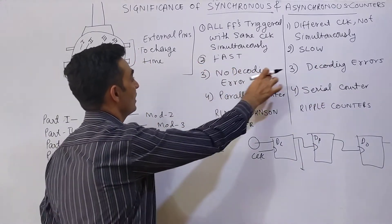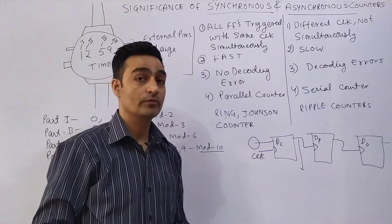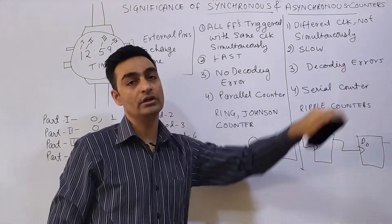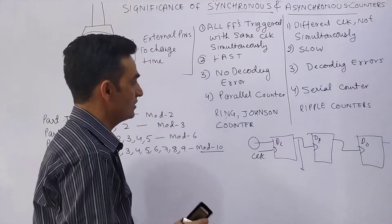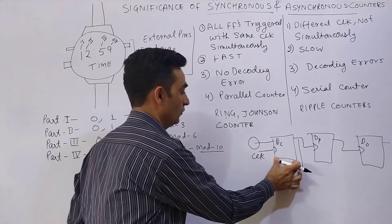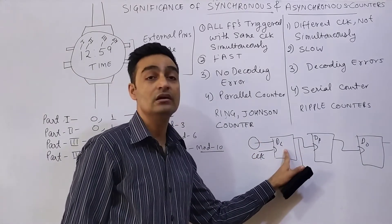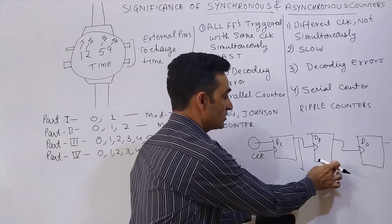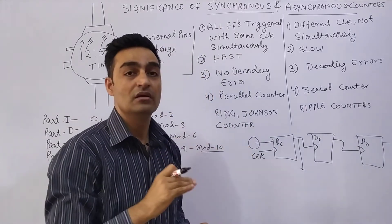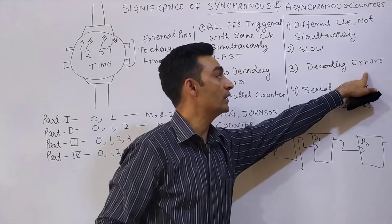The next difference is that Synchronous Counters do not have decoding errors, whereas Asynchronous Counters do have decoding errors. I will mention a link where I discussed a complete detail of decoding errors. A decoding error arises from the delay factor of each flip-flop — the input is applied and the flip-flop generates output only after a certain delay. These delays D1, D2, D3 accumulate, and the accumulation of delay may lead to output errors, which are called decoding errors.